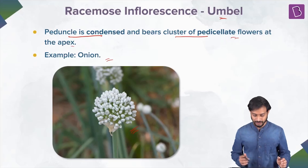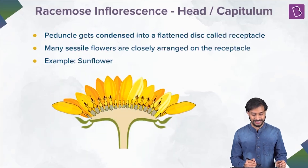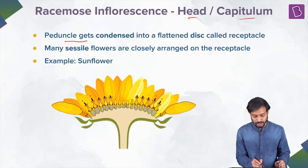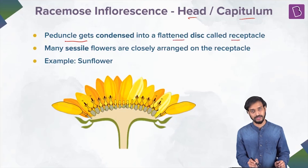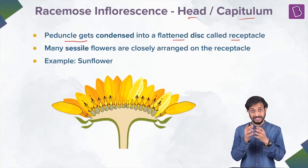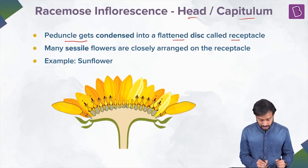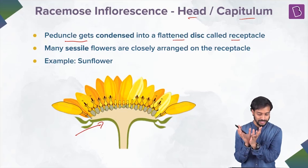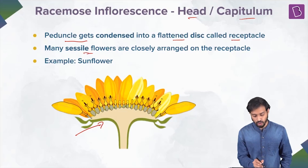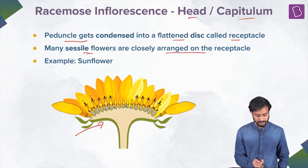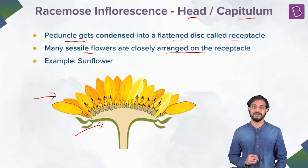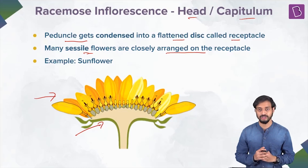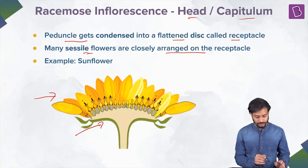The next type is the head or capitulum. Here the peduncle gets condensed into a flattened disc-shaped structure called the receptacle. Many sessile flowers are closely arranged on this receptacle. The example is sunflower.